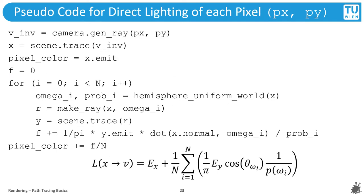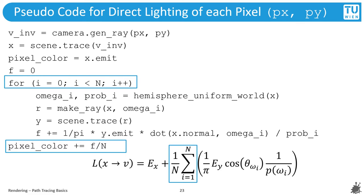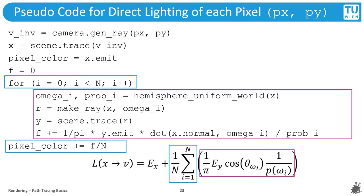Let's implement the solution for direct lighting. We do a straightforward transfer of the expanded rendering equation into code. First, basic setup: we trace the ray through the pixel, find the closest hit, and gather information about it. We use v_inverse for the ray that triggers the hit. The mean for approximating the hemisphere integral is computed by a for-loop with a division at the end. Inside the loop, we generate a uniform sample, trace a ray in that direction, get required info about the hit point, and combine the material, emittance, cosine, and weighting factors.